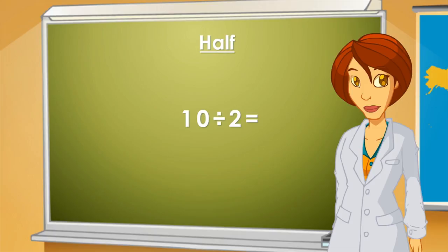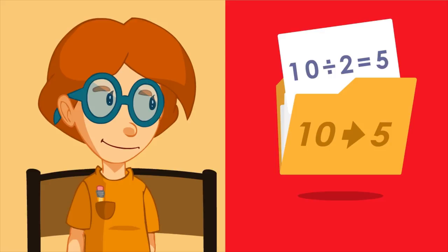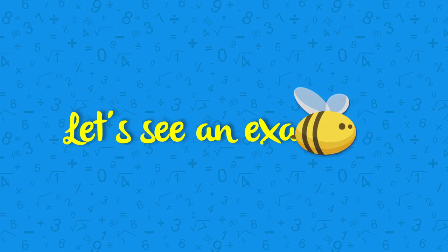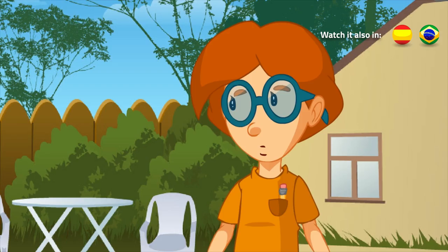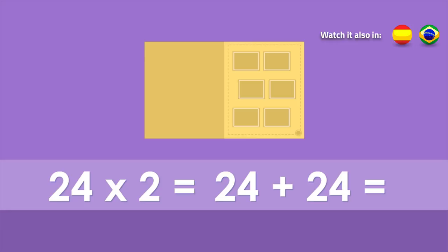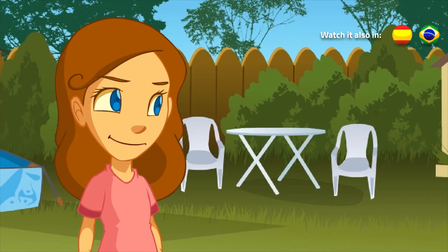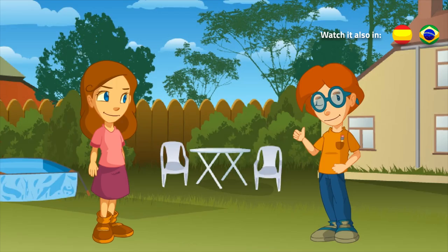Very good. Congratulations. Now I understand. If I've already got twenty-four stickers in the album, to know the double, I must add up twenty-four plus twenty-four. So, how many stickers do you need? I need forty-eight stickers to complete the sticker album. That's great! Excellent, Lucy. You've learned how to calculate the double and half of a number.